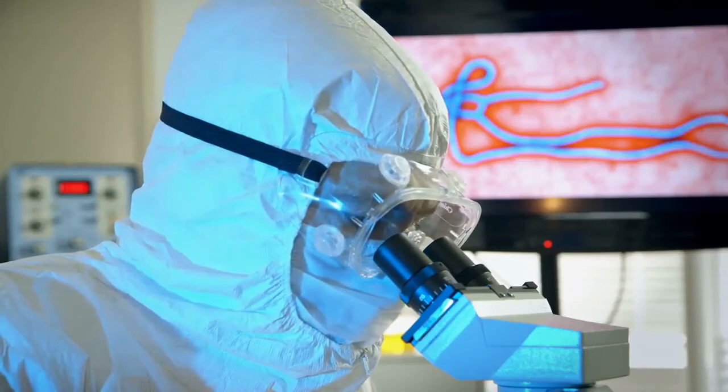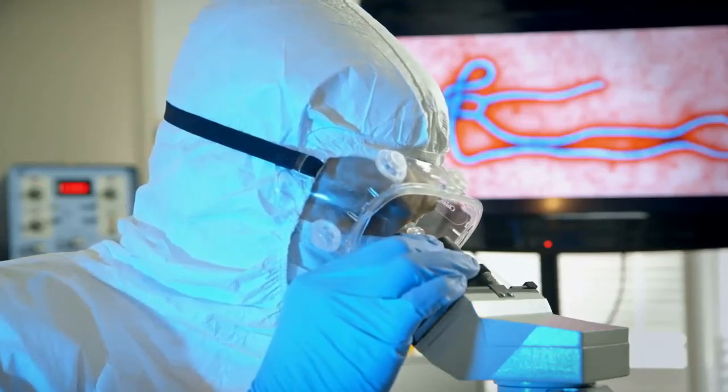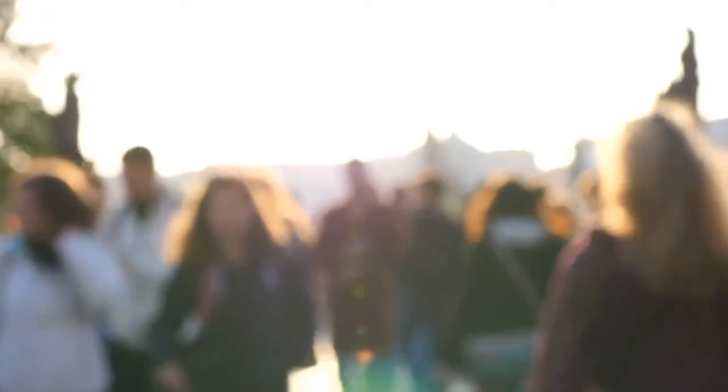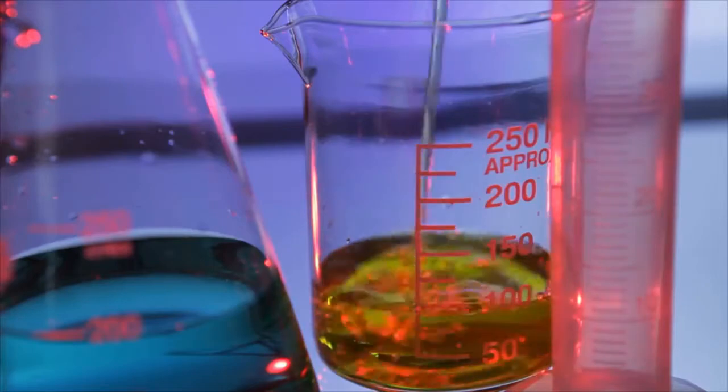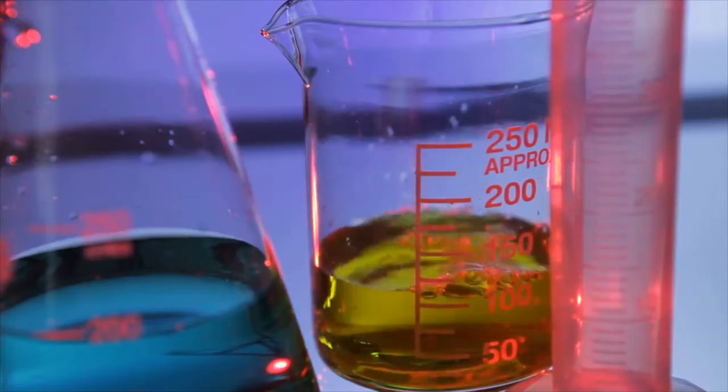The Ebola virus and the Marburg virus live in animal habitats. Humans can get the virus from infected animals. After the first transmission, the virus can spread from person to person through contact with body fluids or contaminants such as infected needles.